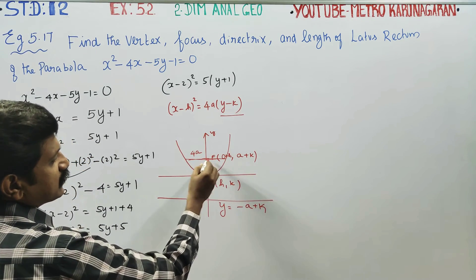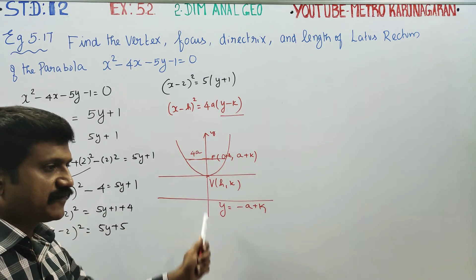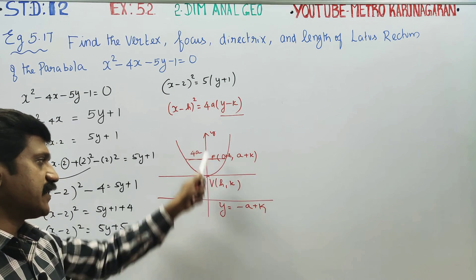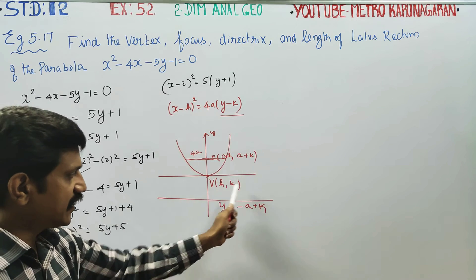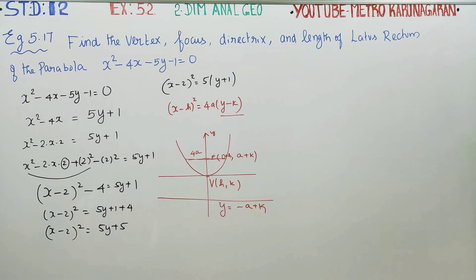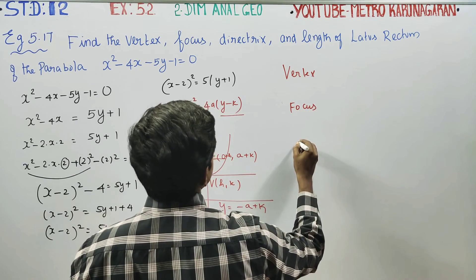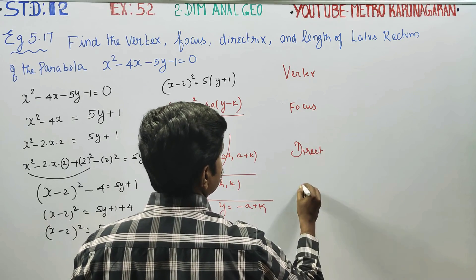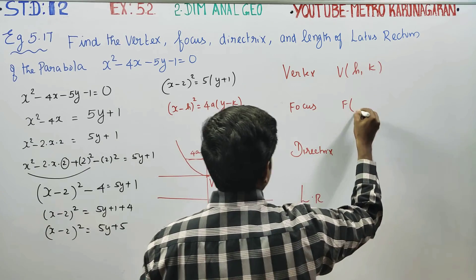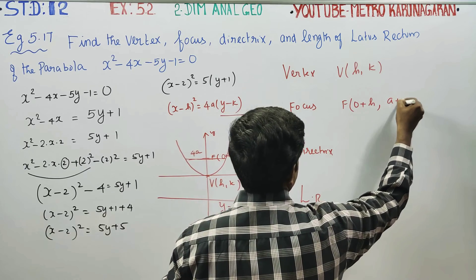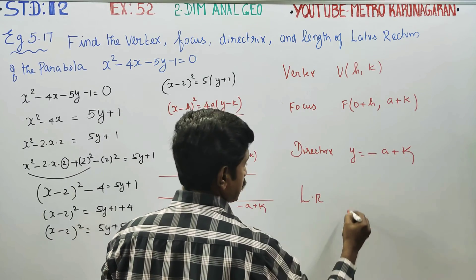Using the formulas: if you use the standard format, you can draw a rough diagram and write all the formulas. The vertex is V(h, k). The focus formula gives (h, a + k). The directrix formula is y = -a + k. The latus rectum length formula is 4a.